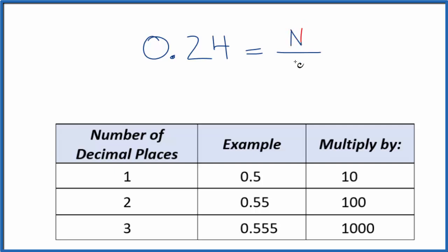We want to have it in a form where we have a numerator over a denominator. And if we divide the numerator by the denominator, we get 0.24. So let's start out just calling this 0.24 over 1.